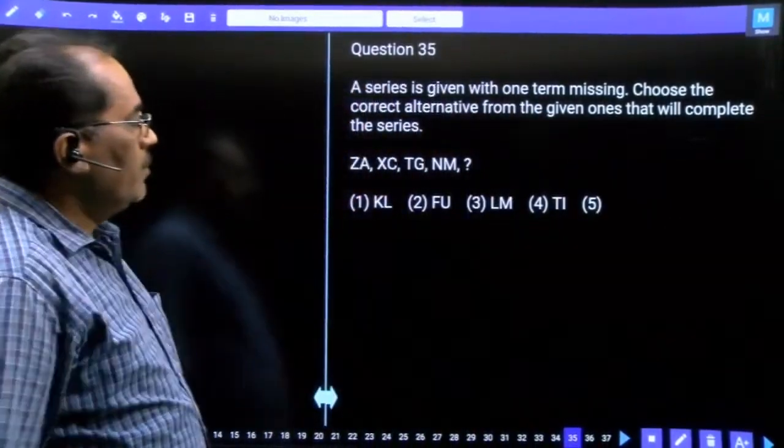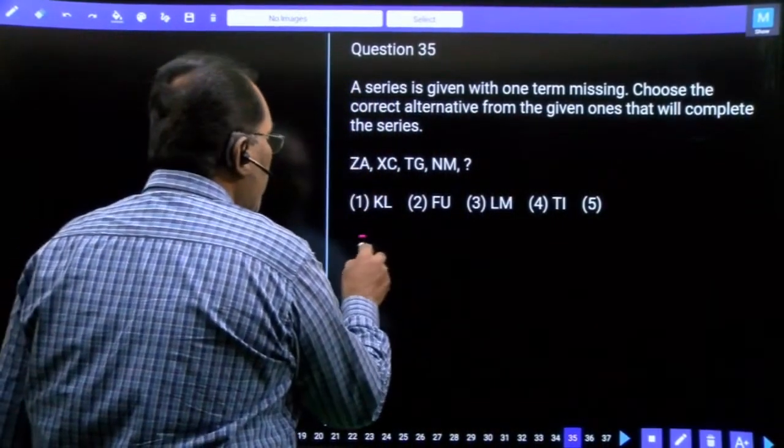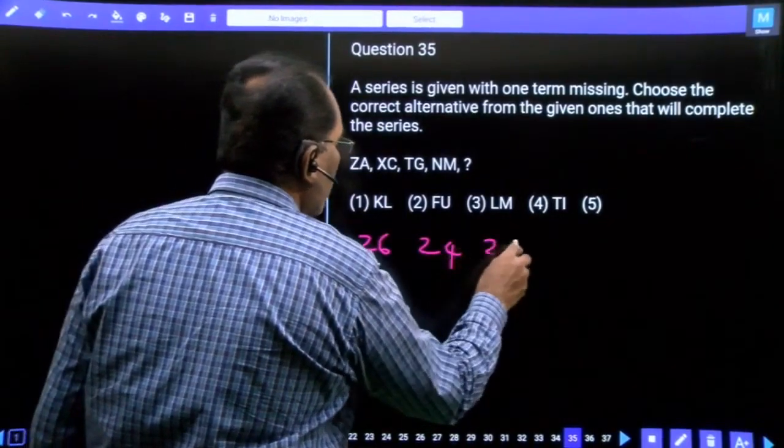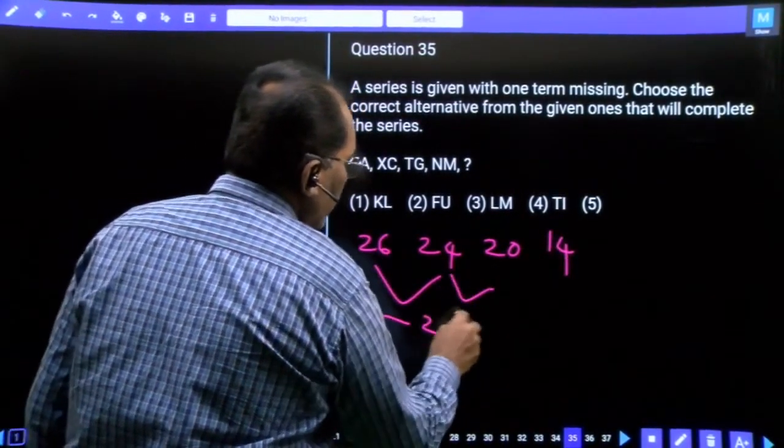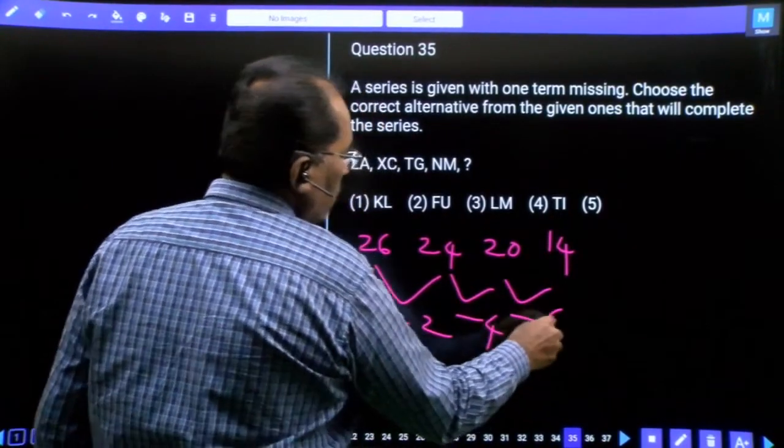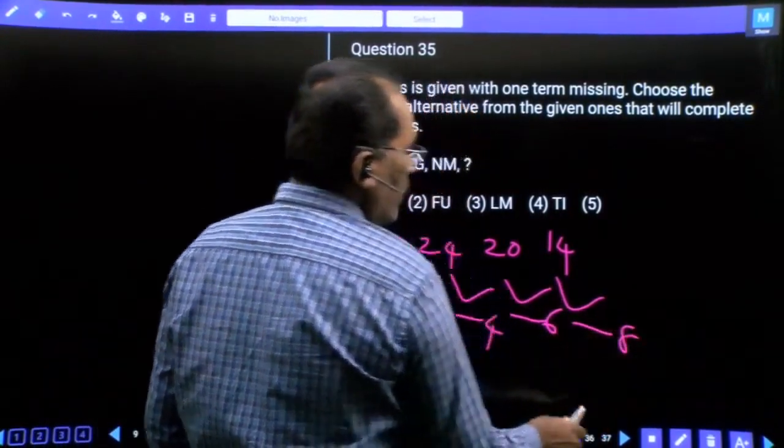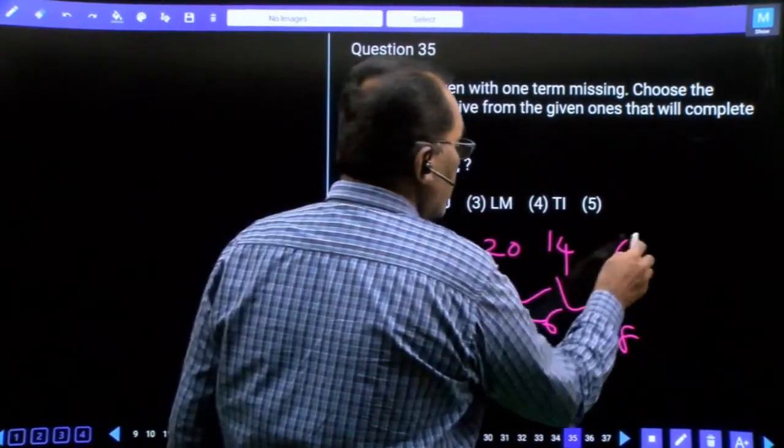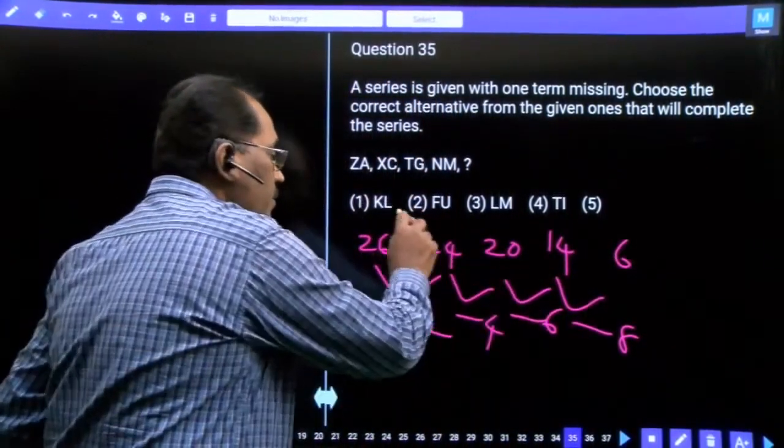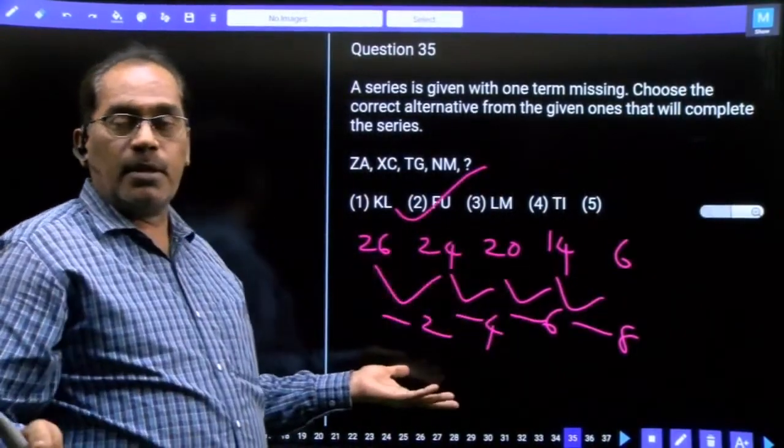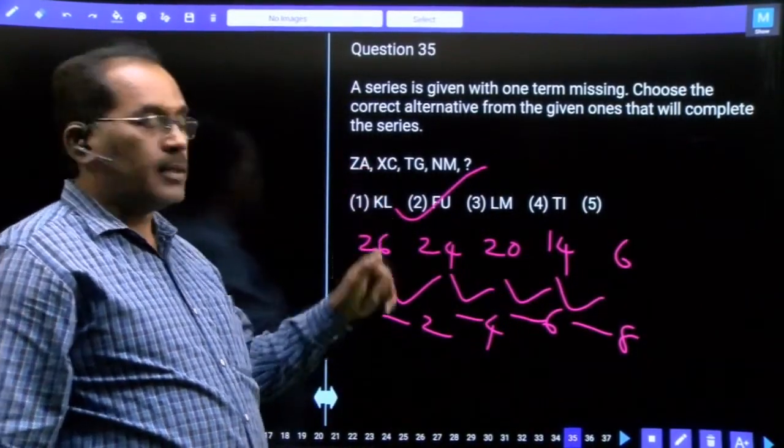Question 35. Z corresponding 26, X corresponding 24, T corresponding 20, N corresponding 14. The difference sequence is minus 2, minus 4, minus 6, minus 8. 14 minus 8 equals 6, which corresponds to F. Our answer is F, second option.